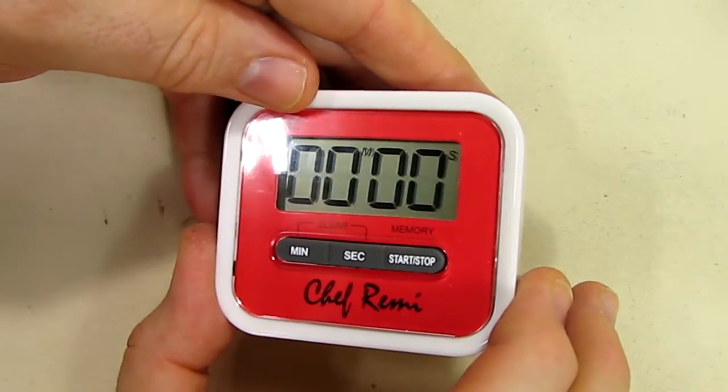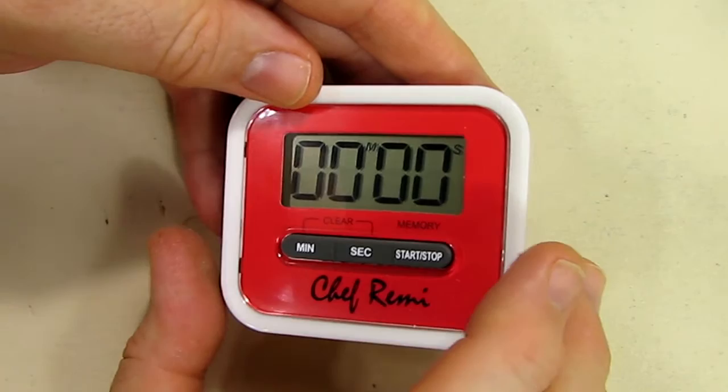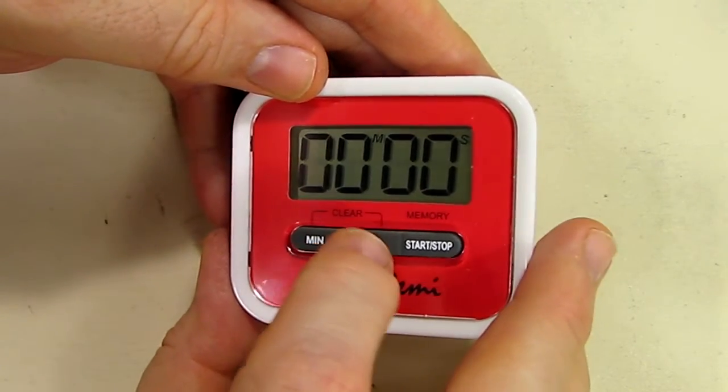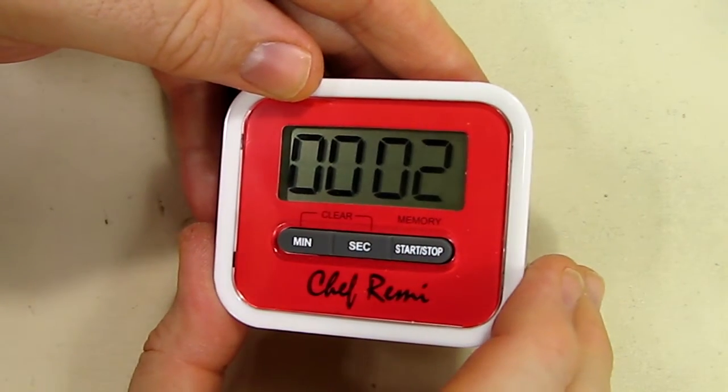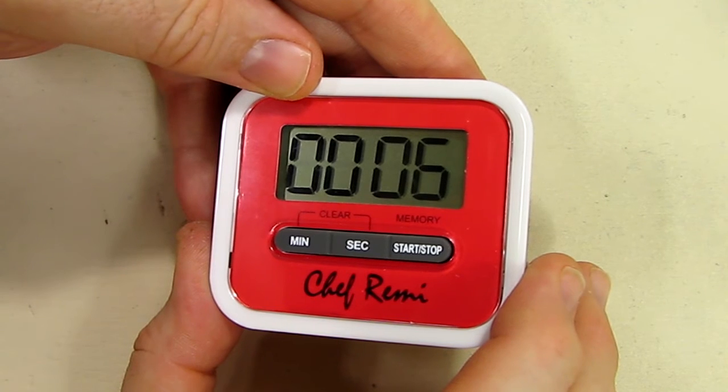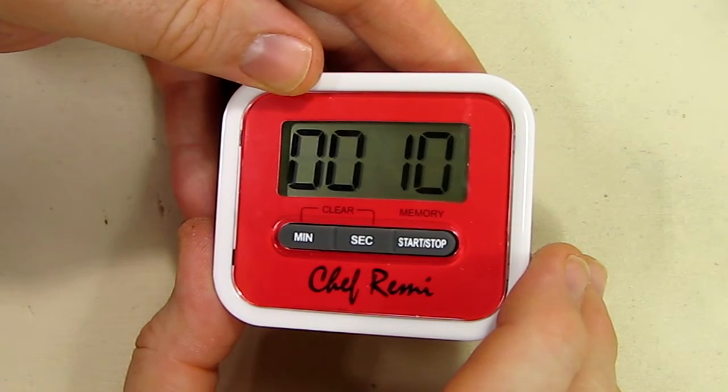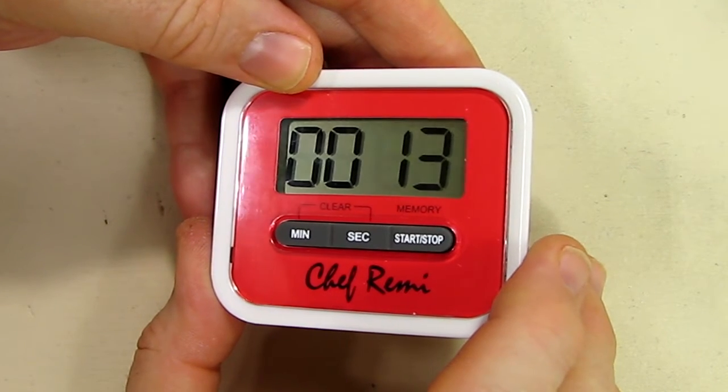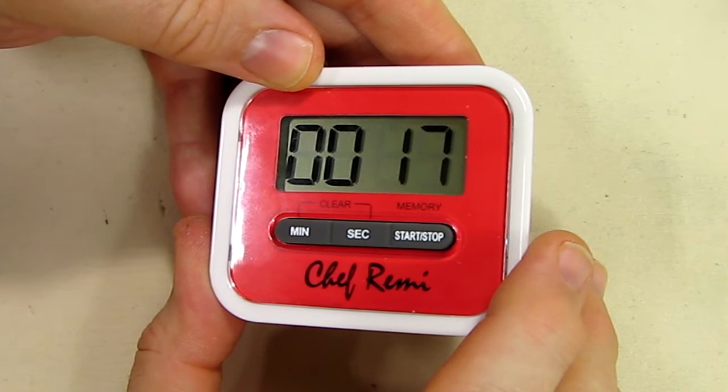It's got a nice big display which is easy to see. If you want to count up, you just hit the start and stop like that, and now you notice it's actually counting up. That's nice if you want to time something you're cooking, like boiling pasta, and you want to see if it really matches if it's nine minutes or 10 minutes or 11.